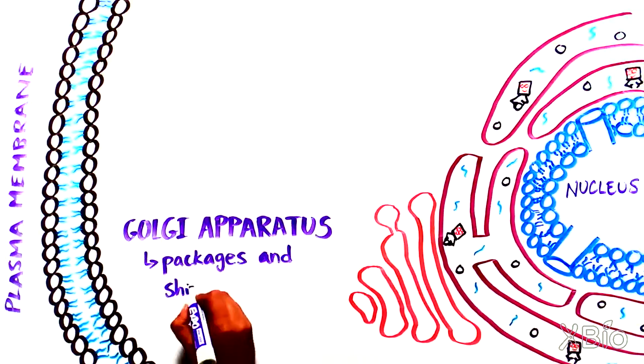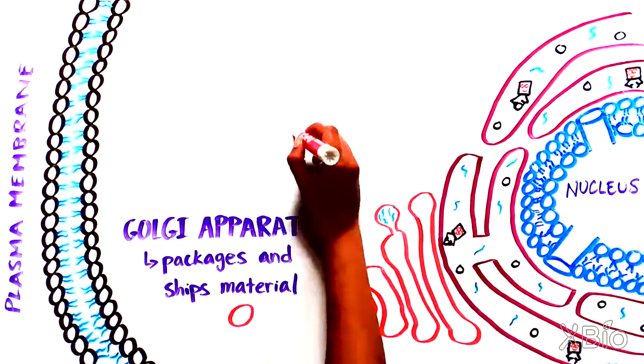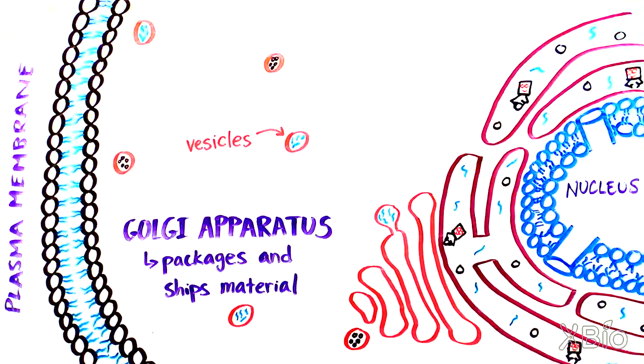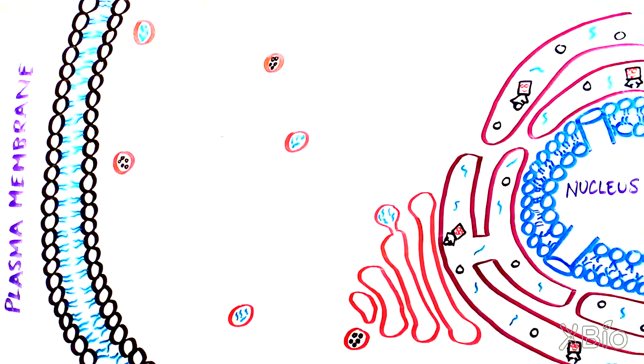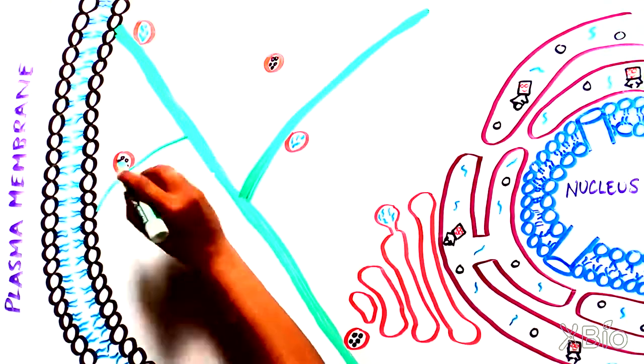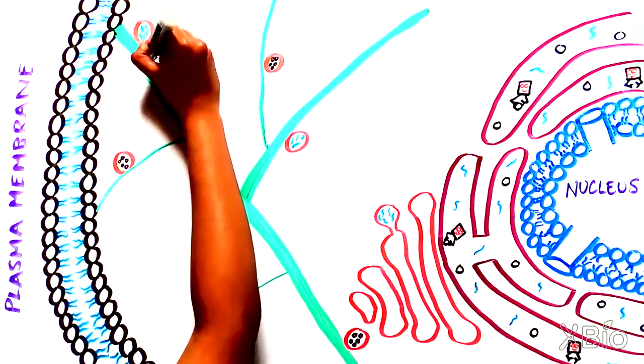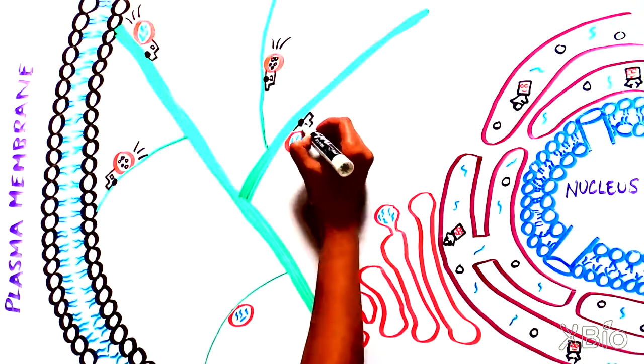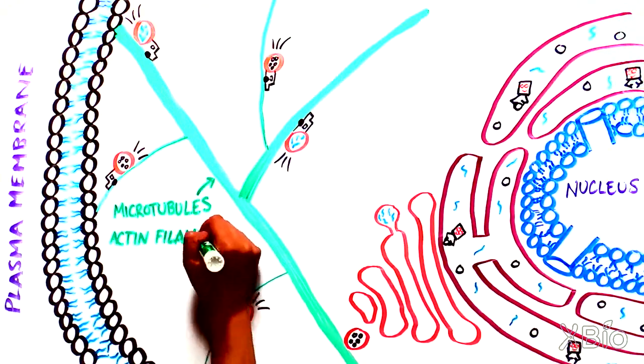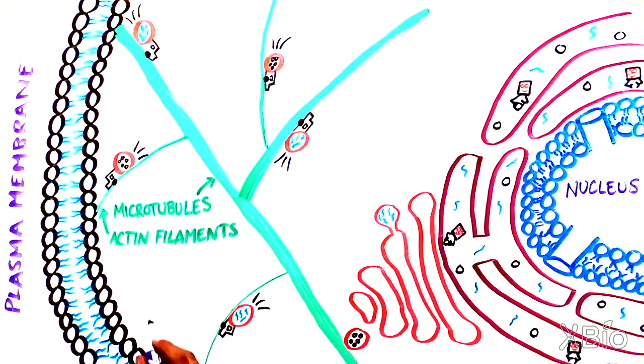The Golgi apparatus repackages these proteins in small shipping containers, called vesicles, that get delivered to various other organelles and to the plasma membrane. How does this delivery occur? Analogous to the way in which packages can be taken around a factory along hallways, vesicles are transported by motor proteins along long protein fibers, called microtubules and actin filaments, which make up the cell's cytoskeleton.